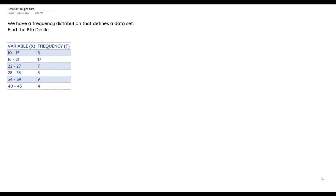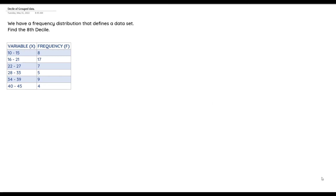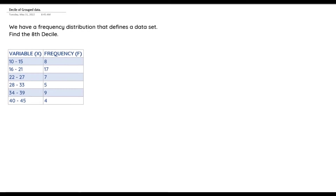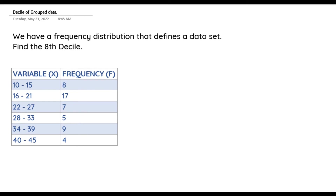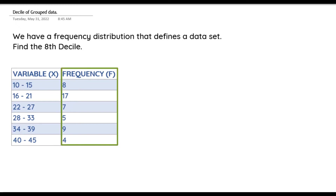In today's video we are going to be learning how to get the decile of a grouped data. Specifically, it's about grouped data based on class. We have a frequency distribution that defines a data set, and we are supposed to find the 8th decile. We have a table with the variable denoted as x and the frequency.